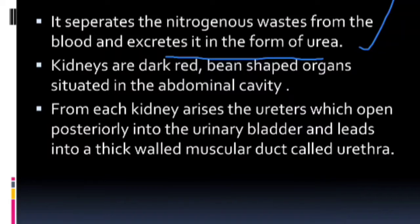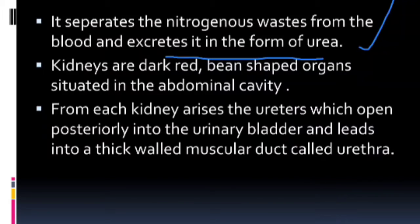Urea is the main waste product in mammals. In some animals, uric acid is the excretory product. Can you give an example of an animal whose excretory product is uric acid? Based on the excretory product, we can classify animals into mainly three types.